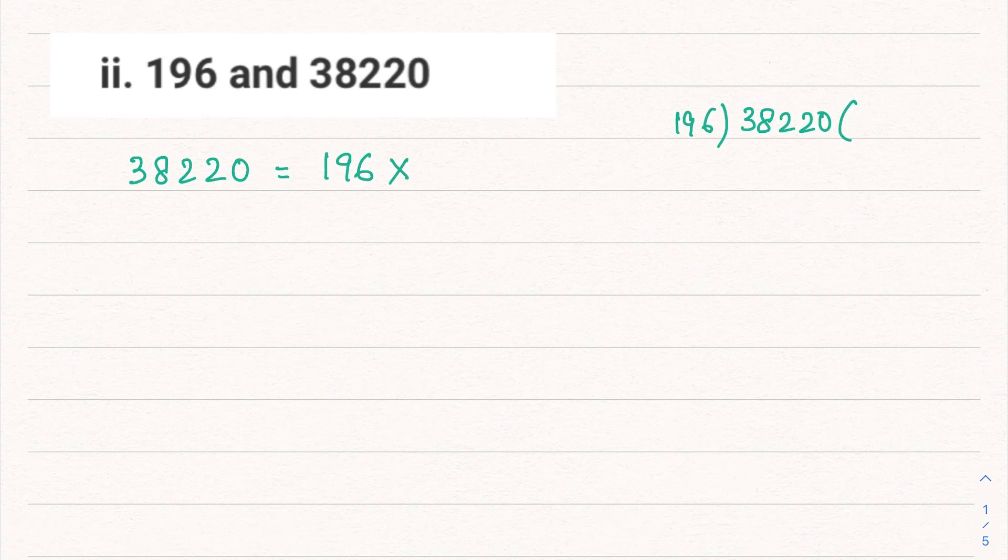196 times 2 is 392, so let's do 1 times. Subtract this, we are getting 1862.